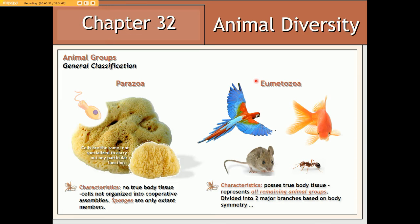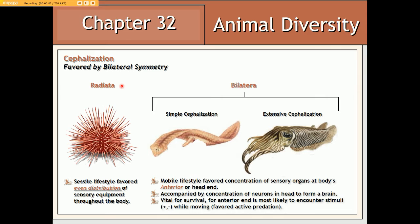The eumetazoans can be further subdivided into two groups based on the body symmetry they exhibit: either radial body symmetry or bilateral body symmetry. Eumetazoan animals that exhibit radial body symmetry are placed in the group Radiata. These animals by and large adopt a sessile or non-motile lifestyle, and natural selection would have favored an even distribution of sensory equipment throughout the entire body so that the animal can respond to stimuli from any direction.